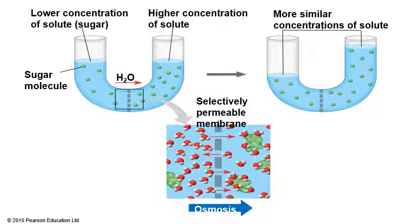To prepare kimchi, you put the cabbage in very salty water and wait a few hours or overnight. Water from inside the cabbage goes out into the saltier water. The cabbage shrinks and becomes soft after losing water into the saltier water. Into higher concentration of solute, the cabbage loses water through the membrane from a region of lower solute concentration. Understand this and don't be confused.